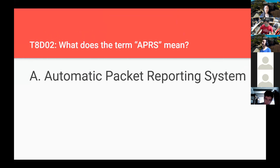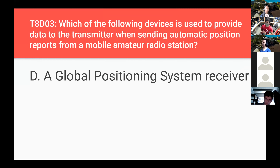What does the term APRS mean? Automatic Packet Reporting System. Which of the following devices is used to provide data to the transmitter when sending automatic position reports from a mobile amateur radio station? A global positioning system receiver — the keyword is position, and you get that from a GPS receiver.